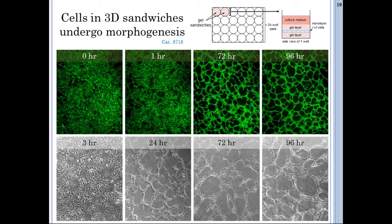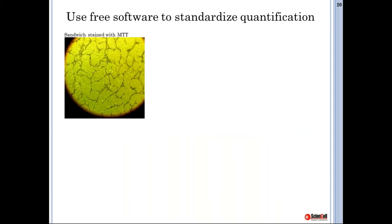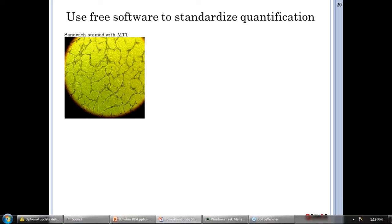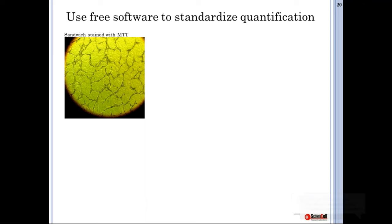The basic progression with kit 8718 starts with a confluent monolayer, followed by cell migration and reorganization after the top gel layer is added. Endothelial morphogenesis, branching, and network formation occur over the next few days, with the assay terminating on day four with some remodeling and rudimentary cord pruning. Once you have a network, you can analyze it colorimetrically by staining with staining-grade crystal violet or a tetrazolium salt like MTT.